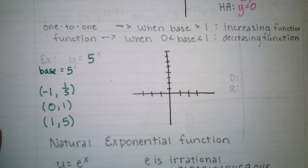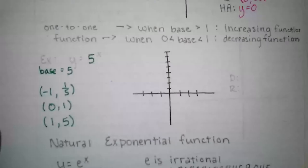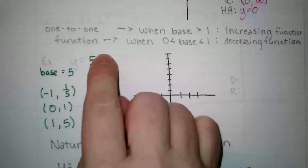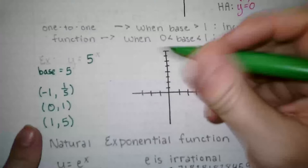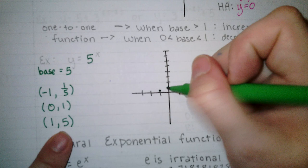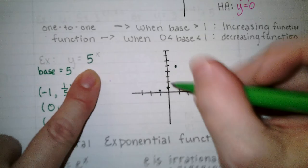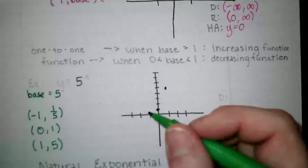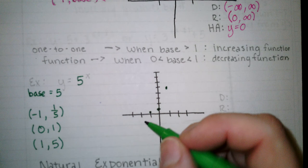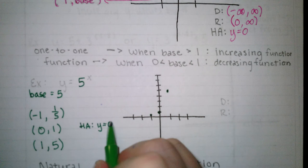This function does not have any transformations. It just has the base and a power of x. So these points are going to go right onto the graph. So negative 1, 1 fifth. 1 fifth is like 0.2. 0, 1. And 1, 5. Now, if I were to put 2 in for x, an input of 2 would give me an output of 25. So 2, 25 would be way up there. Remember that these graphs start out with a horizontal asymptote at y equals 0, unless we have transformations. This one does not have any transformations, so I still have that horizontal asymptote at y equals 0.